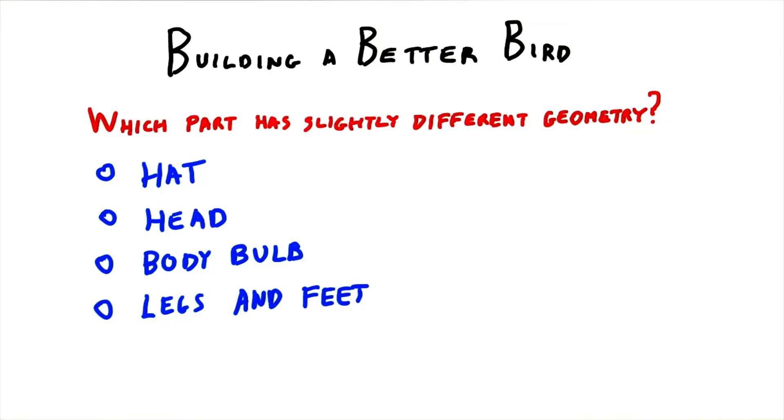In the previous exercise, I modified the drinking bird's geometry itself a bit from the original model. I'm going to let you use your detective skills to figure out what I've changed.